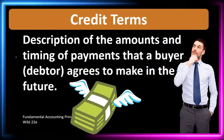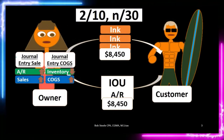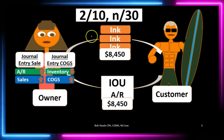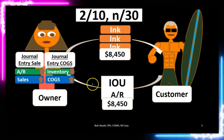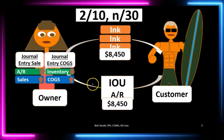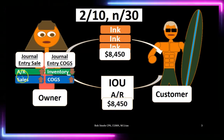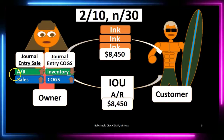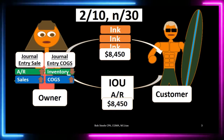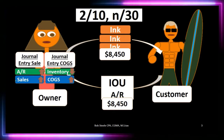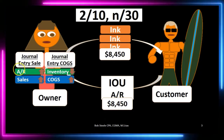For example, if we had a transaction where we're selling inventory and getting an IOU, it goes on the books with a debit to accounts receivable and a credit to sales.